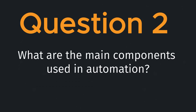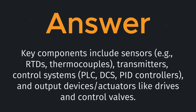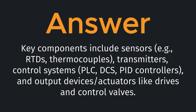Question two: what are the main components used in automation? Key components include sensors like RTDs, thermocouples, transmitters, control systems — PLC, DCS, PID controllers — and output devices such as actuators like drives and control valves.